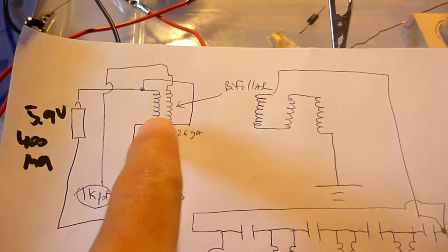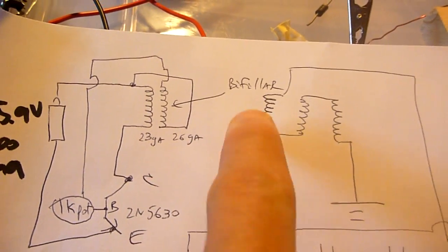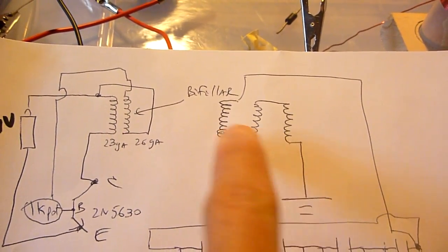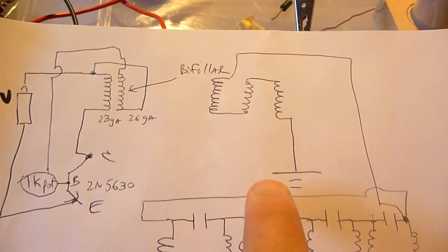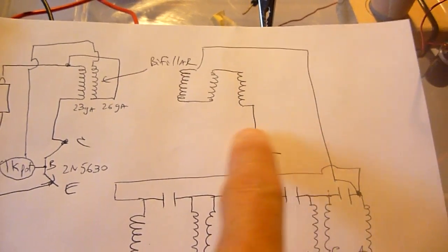So we have the first layer is bi-filler, 23-gauge and 26-gauge wire. And then on top of that we have three layers of 20-gauge wire. And one end of the wire is terminated in my house ground, up there.